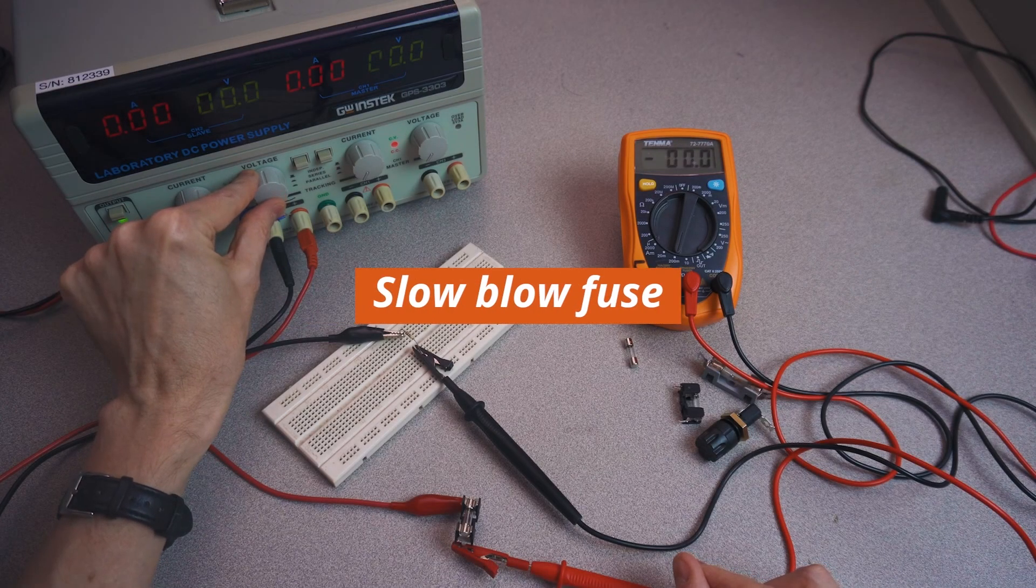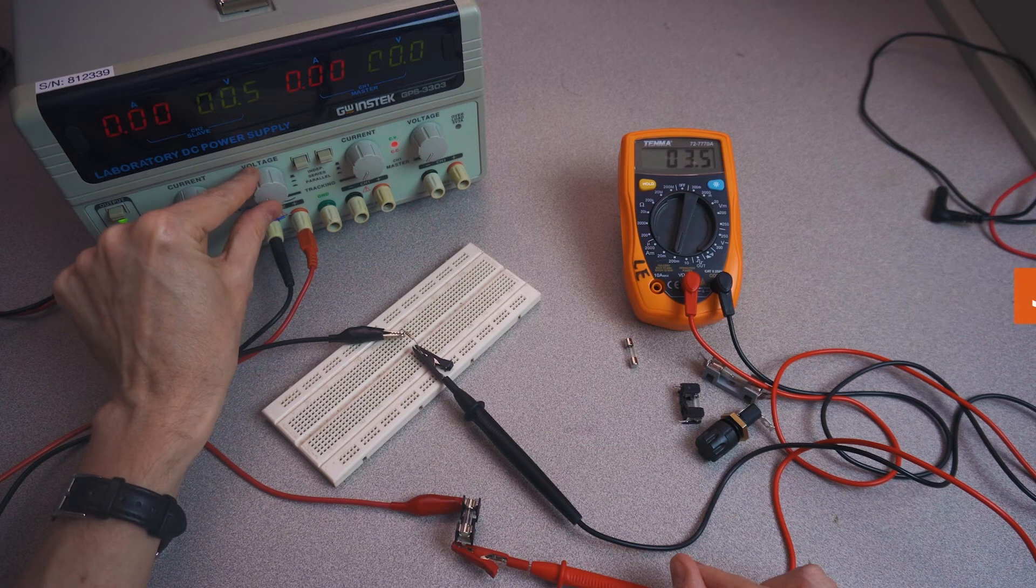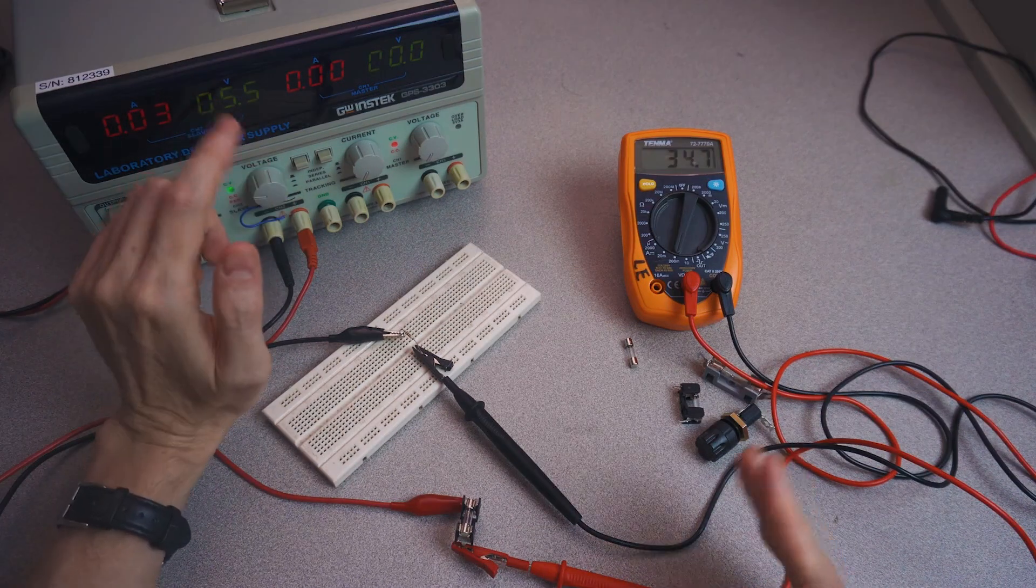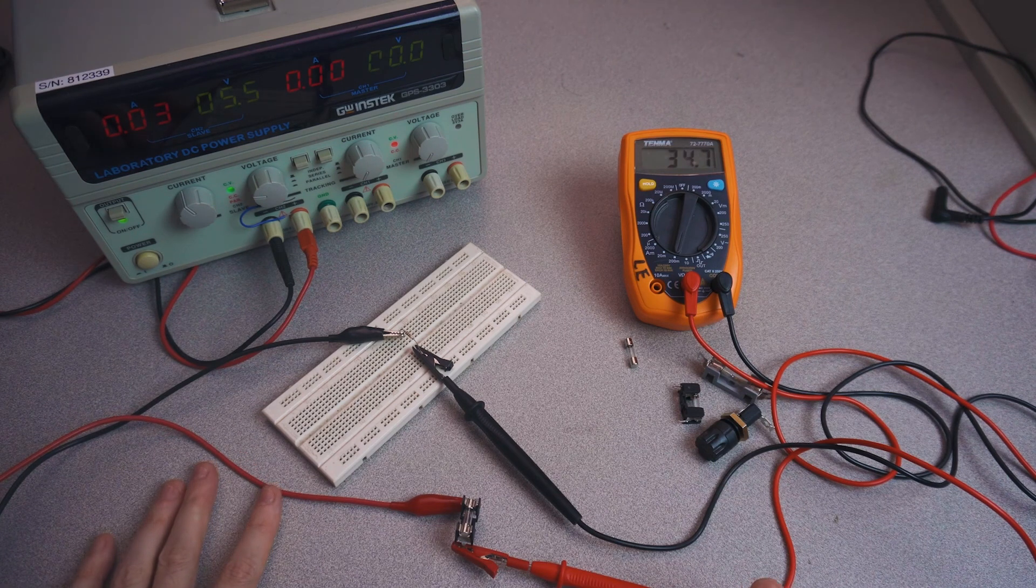First, I'm going to turn the current up to 35 milliamps, which is the rated current for this slow blow fuse. The fuse hasn't blown out, and that's exactly what we expect.